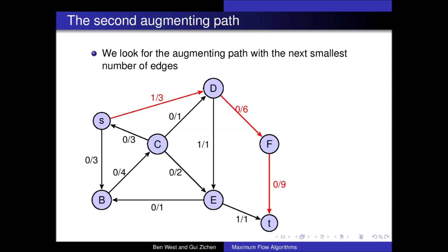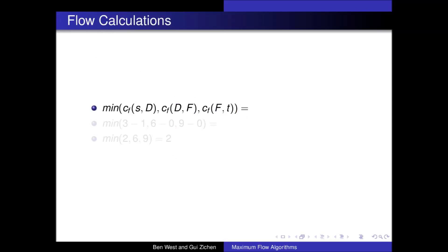We look for the next shortest augmenting path and find another path of length 3, comprising of edges SD, DF, and FT. Again we calculate the flow value that can be pushed along this path. We find it has residual capacities of 2, 6, and 9. Therefore we can push 2 units of flow down this particular path.